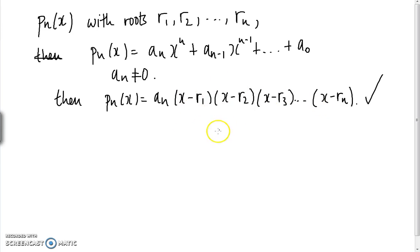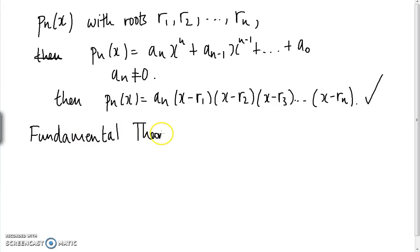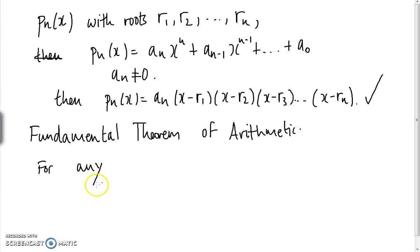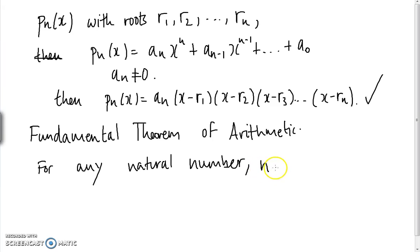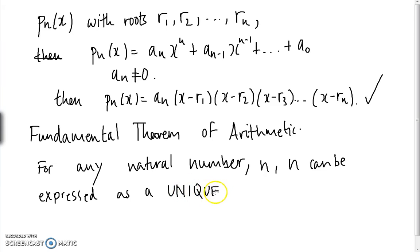Why does this seem analogous to something to do with the natural numbers? Well, there's something called the fundamental theorem of arithmetic. Basically what it says is, for any natural number n, n can be expressed as a unique product of prime numbers — there's only one way to express it.